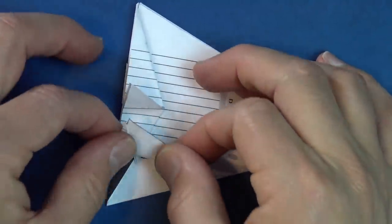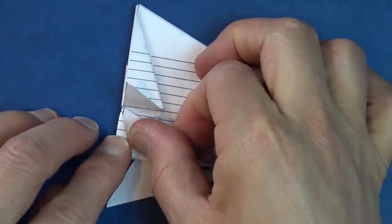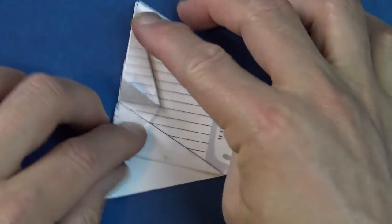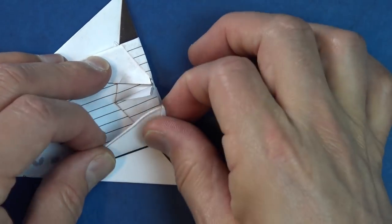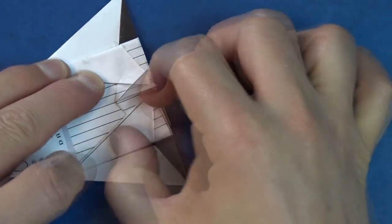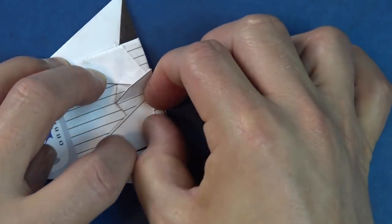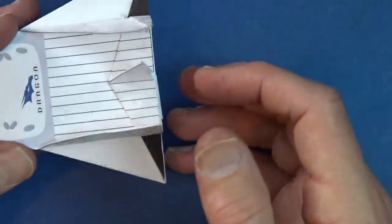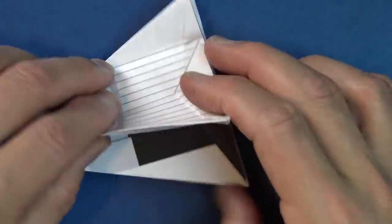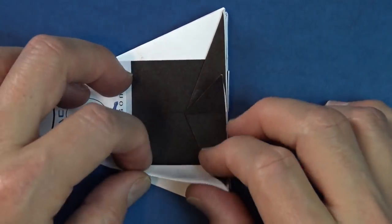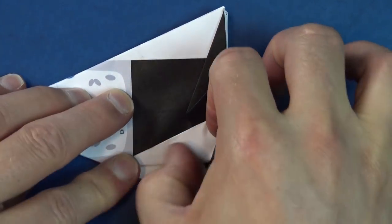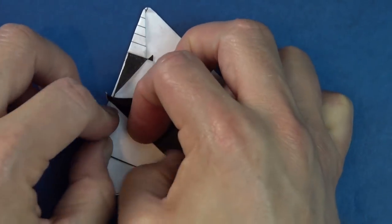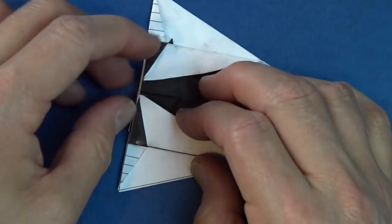Now fold this flap up so that this corner touches the base of the rabbit ear. Right there. And repeat. And repeat. I have a little ink on my hands. I'm smudging the model a little bit. Oh well. It looks like a space shuttle. Whoosh. All right. And now turn over and repeat on this side. And unfold.